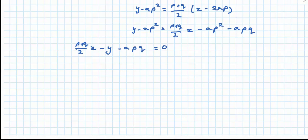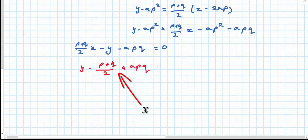Now that's the general form. Sometimes you'll see this equation written as y equals p plus q over 2 times x plus apq equals 0. But just remember that the general form has x as its first term.